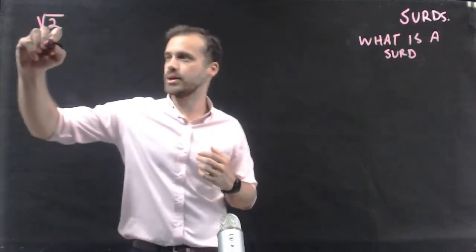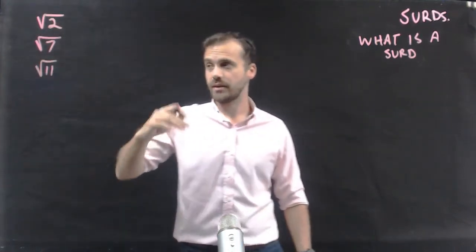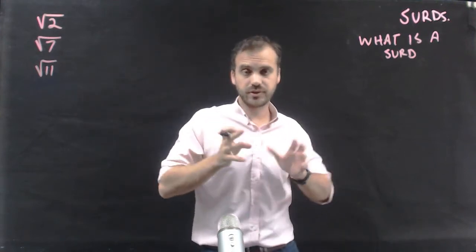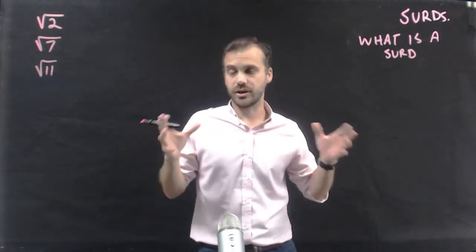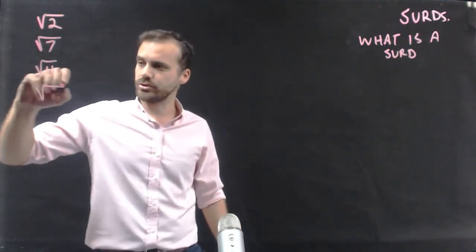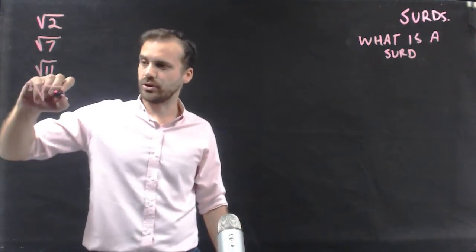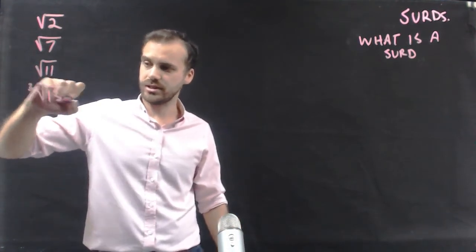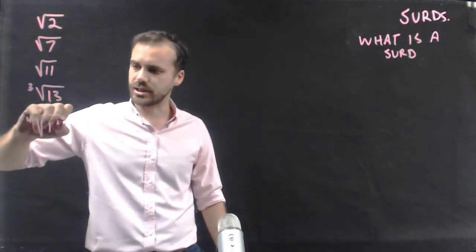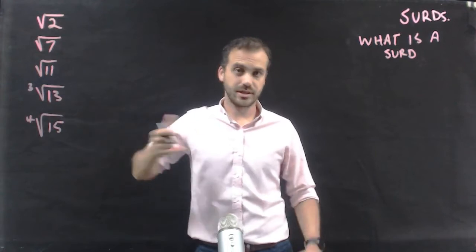Other ones might be the square root of 7, the square root of 11. If I type those into my calculator, I'll get a string of decimals that go on forever and ever. It's not just square roots either — we can do cube roots, like the cube root of 13, and we can do fourth roots as well, like the fourth root of 15. All of these are surds.